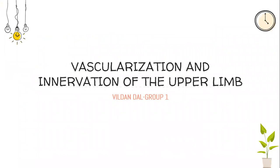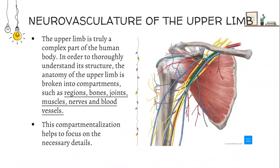Hello, I will present vascularization and innervation of the upper limb. The neurovascular nature of the upper limb makes it a truly complex part of the human body. In order to understand its structure, the anatomy of the upper limb is broken into complements such as regions, bones, joints, muscles, nerves, and blood vessels. This compartmentalization helps to focus on the necessary details.